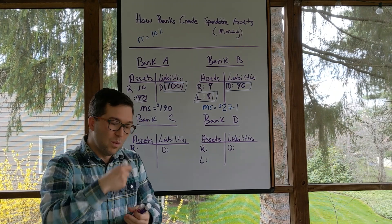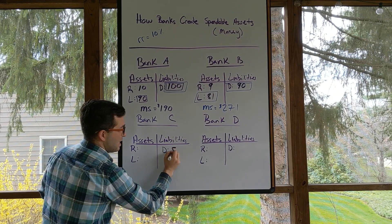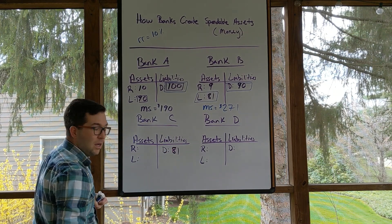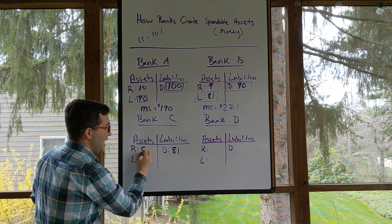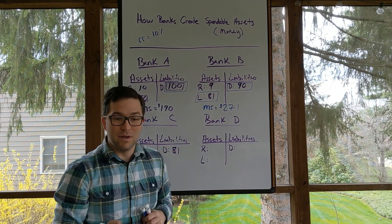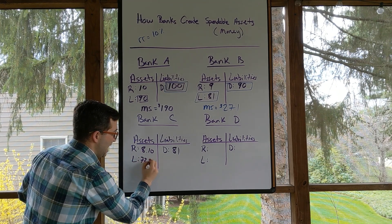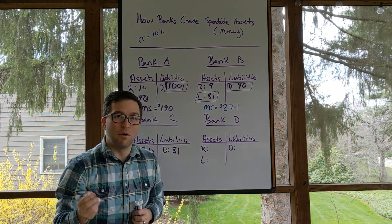So then what happens? We can do this again. This $81 gets deposited down here, which means that we're going to have $8.10 kept as a reserve, and the $72.90 is what's left over to lend out.